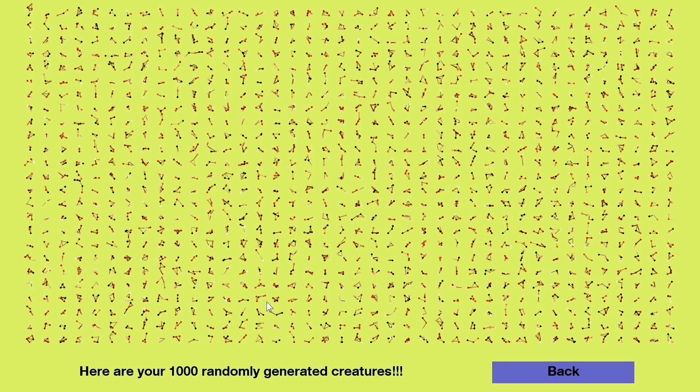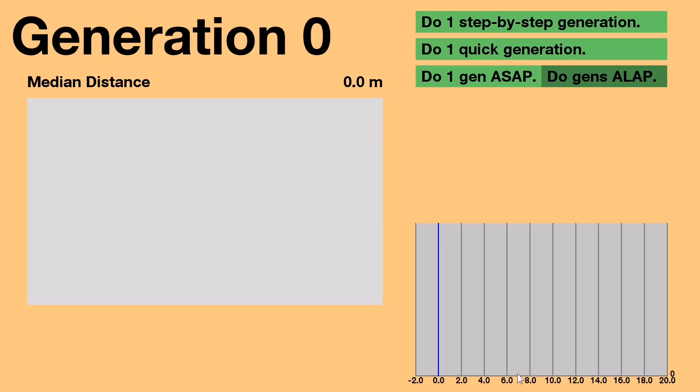So, here are our 1,000 randomly generated creatures. Their goal is to run as far as possible to the right in 15 seconds. They don't know that yet, but it's true. To start off, let's do a step-by-step generation to see what's going on behind the scenes with every generation that happens.